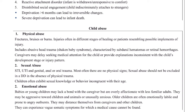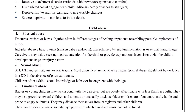Child abuse: physical abuse — whenever a child comes to the hospital and you find injuries in different stages of healing, fractures, bruises, or burns that cannot be explained by the caretaker, you need to call child protective services. Do not let the child return home with the caregiver. There may be subdural hematomas or retinal hemorrhages, so evaluate the child further. Caregivers may delay seeking medical attention because they know they will be in trouble.